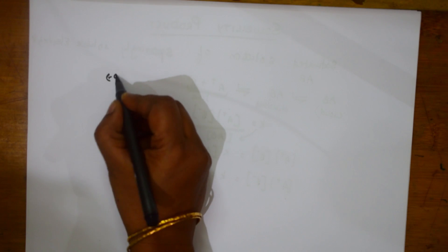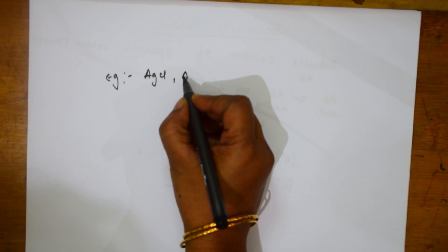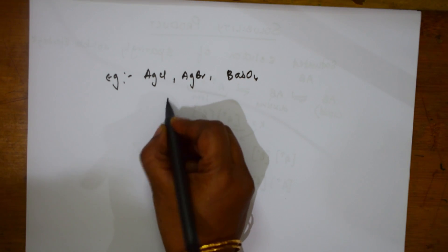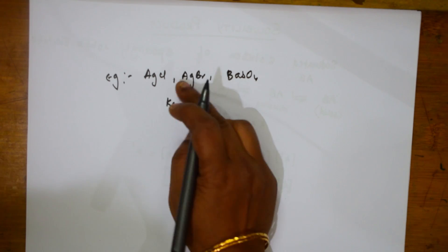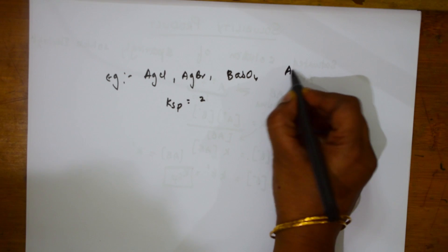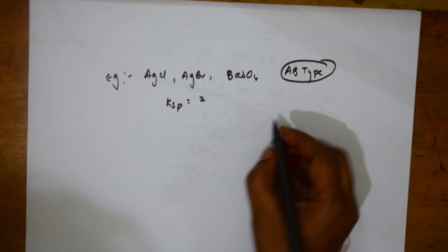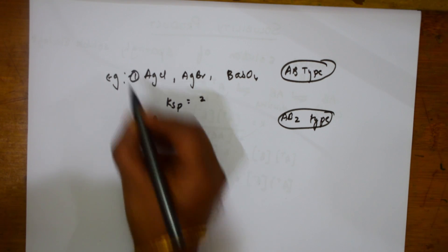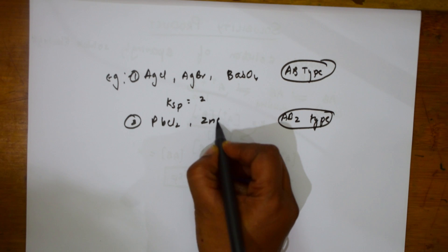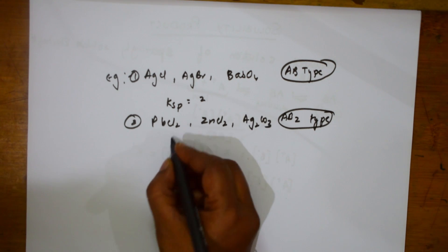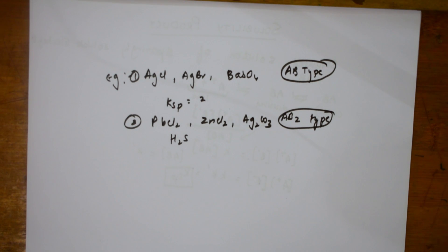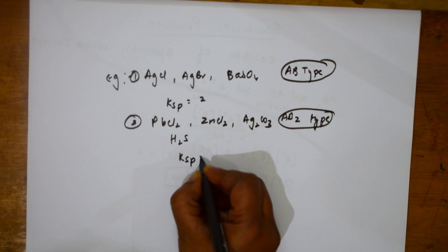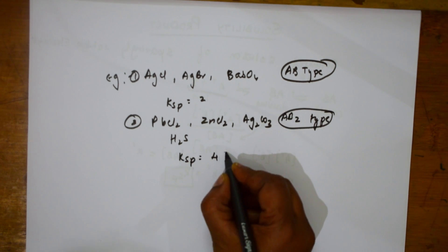Let me take examples. Silver chloride, silver bromide, or barium sulphate — these are AB type with 1 cation and 1 anion, giving Ksp with 1 plus 1 equals 2 ions. For AB2 type — like PbCl2, ZnCl2, or Ag2CO3 — the ratio is 1:2 or 2:1. For this type, Ksp becomes 4S cubed. For AB3 type — like aluminium chloride or ferric hydroxide — the 1:3 ratio gives Ksp equal to 27S to the power of 4.